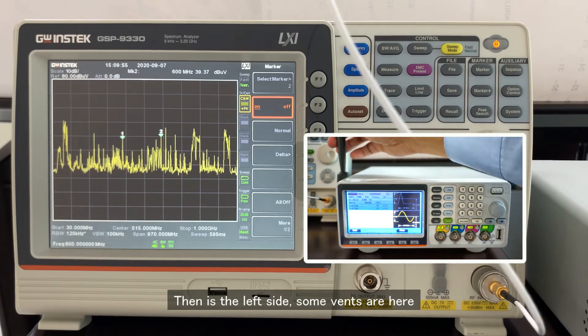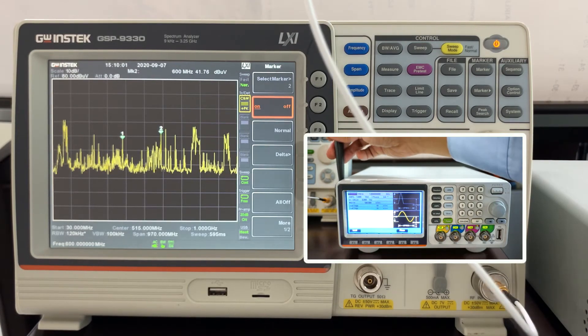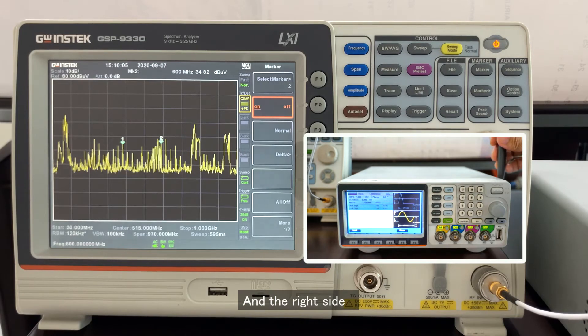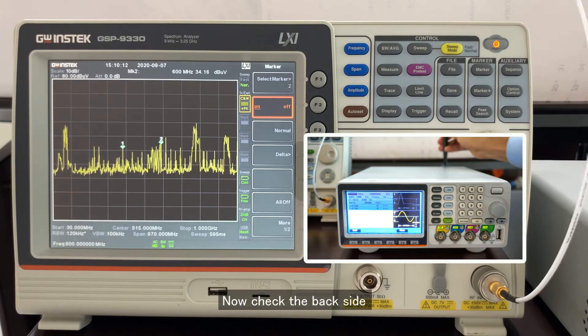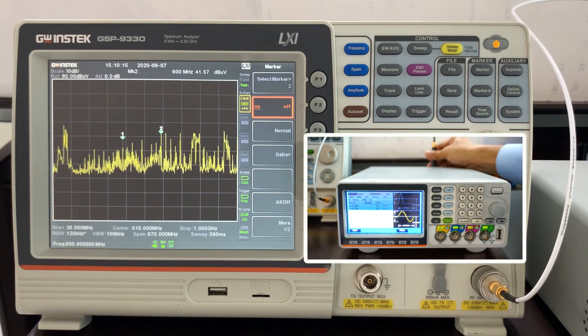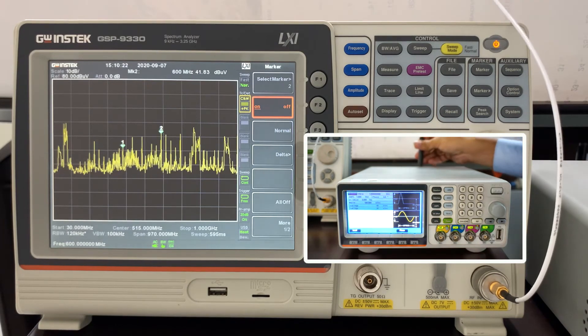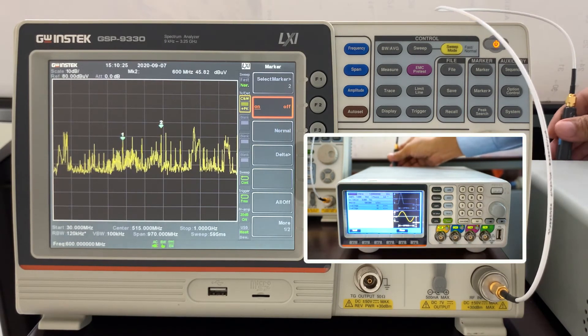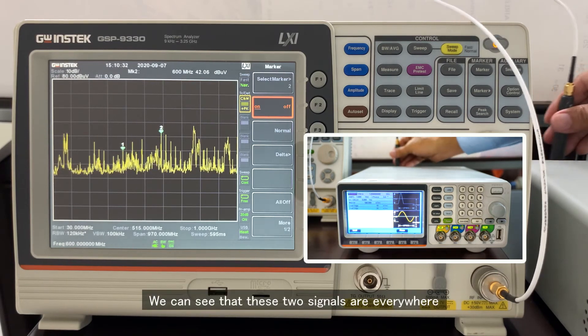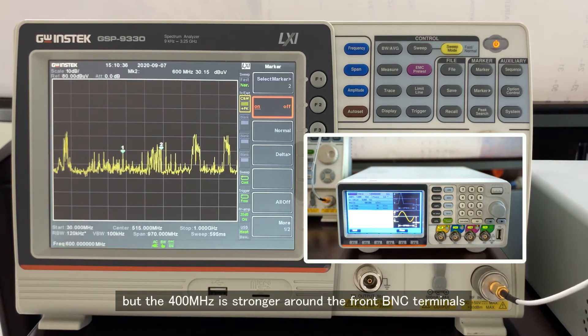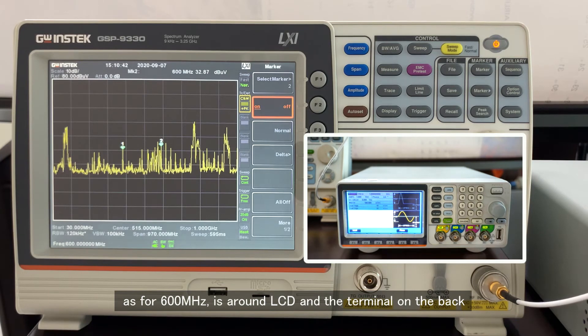Then is the left side. Some vents are here. And the right side. Now check the back side. Both signals are strong over here. We can see that these two signals are everywhere, but the 400MHz is stronger around the front BNC terminals. As for 600MHz, it's around LCD and the terminal on the back.